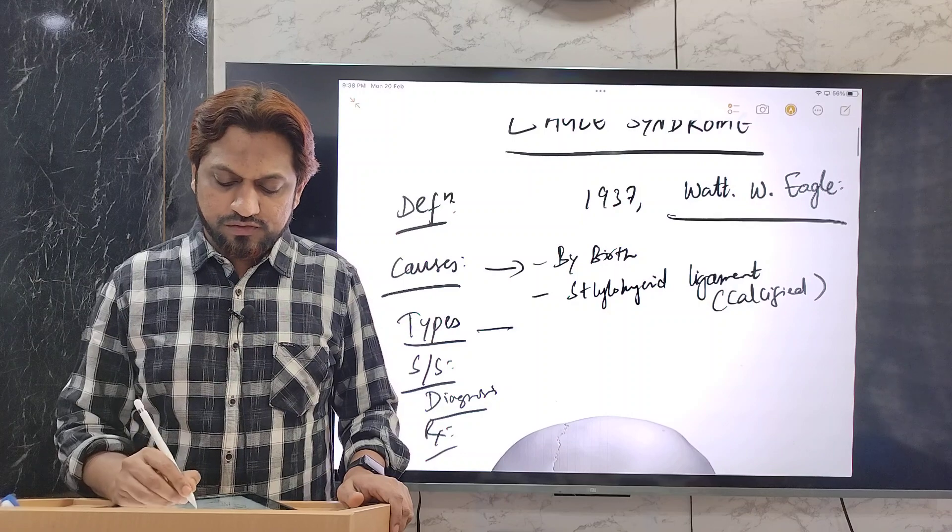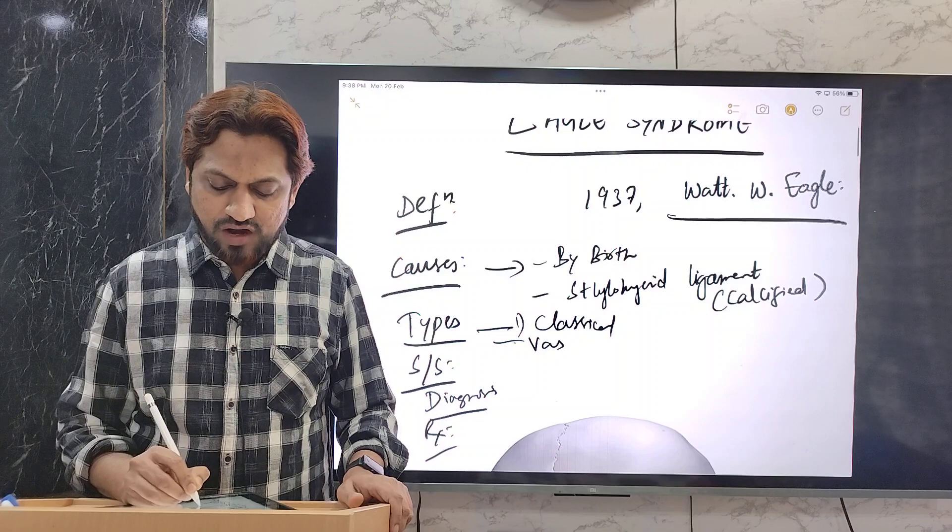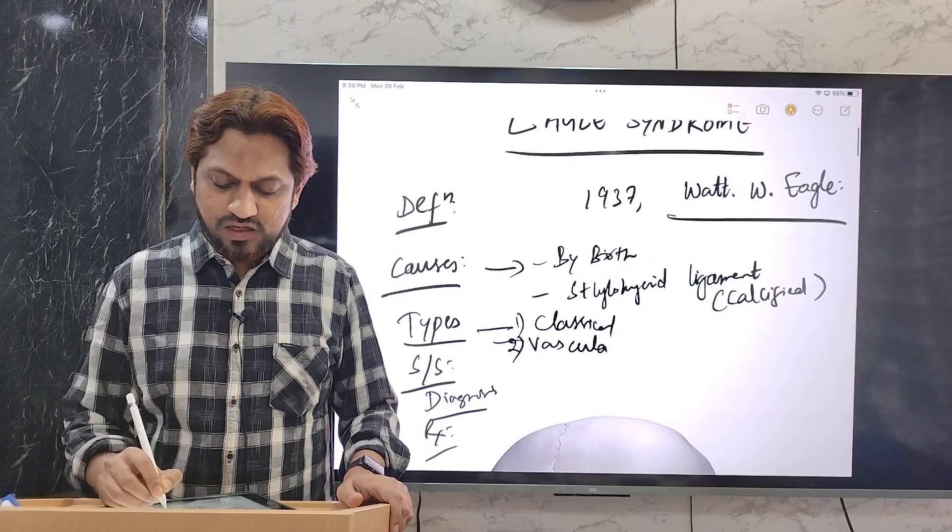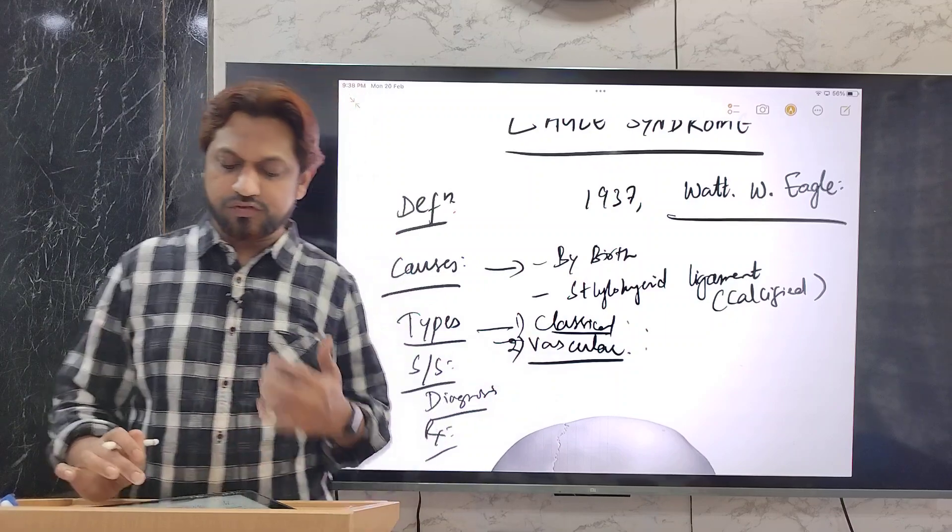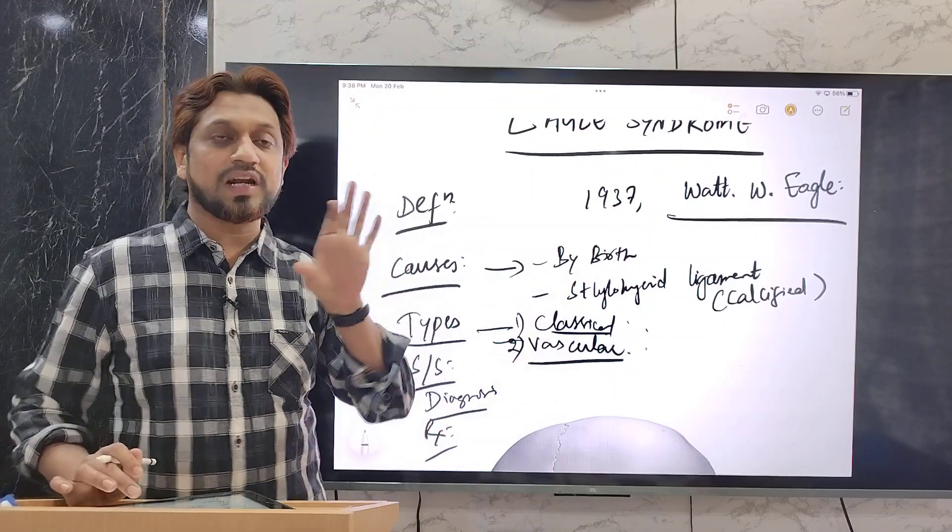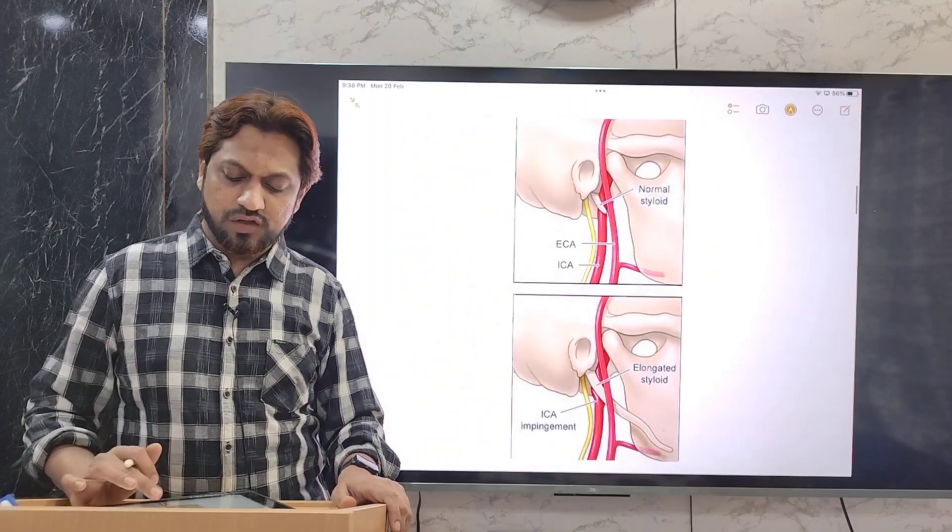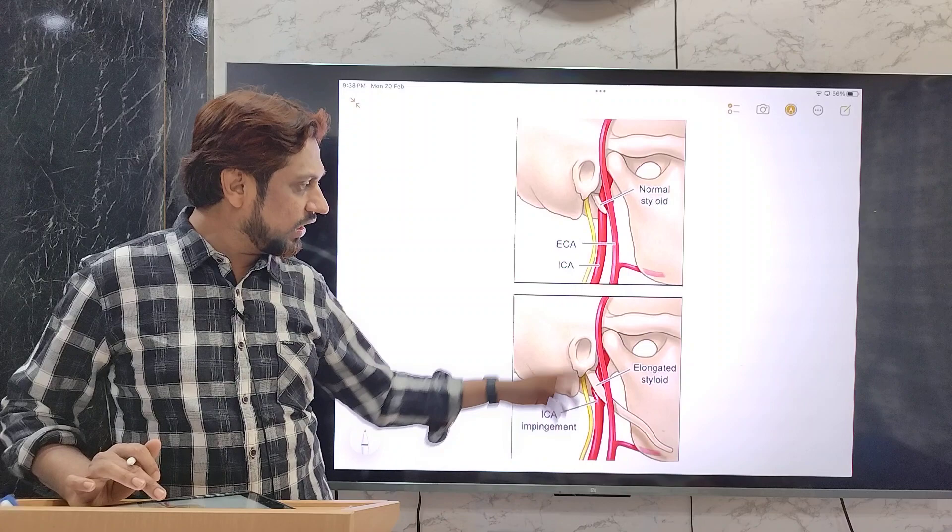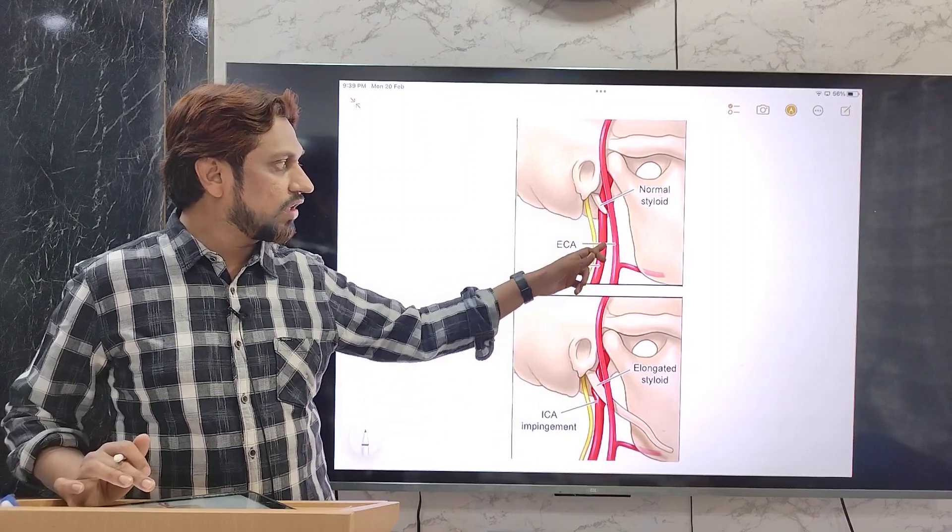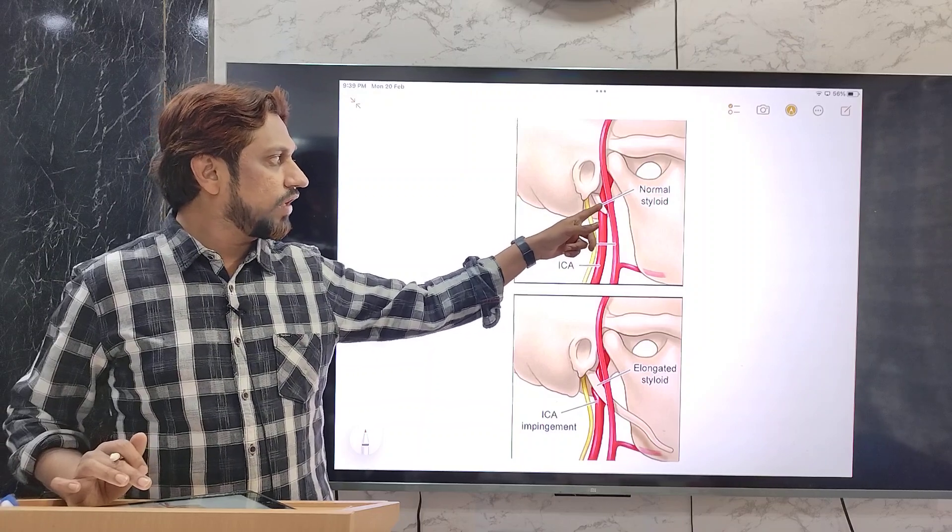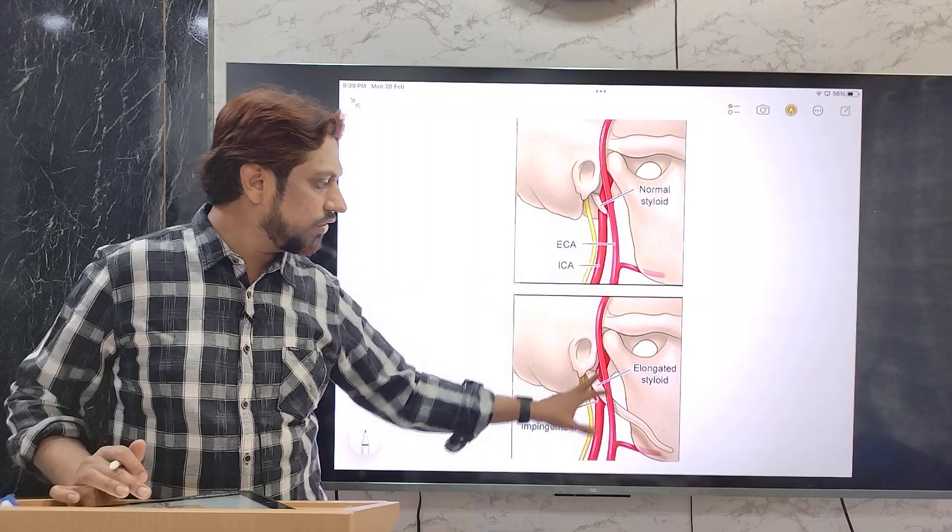What are the types of this Eagle syndrome? Classical and vascular, two types have been identified. What is classical Eagle syndrome and what is vascular? Classical Eagle syndrome is what I have just now described you. That is, it is due to the enlargement of the styloid process. If at all, if this enlargement of the styloid process compresses the internal carotid artery, internal carotid artery, you can see the anatomical relation with the styloid process.